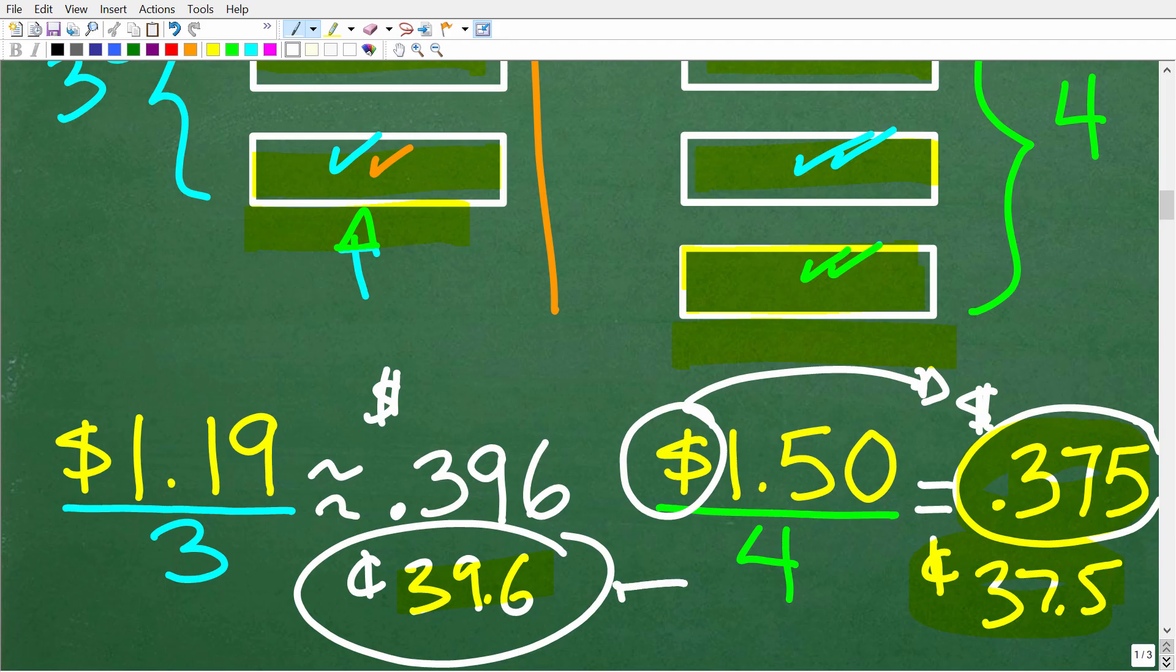So this is the more expensive offer. So the better deal is this right here, the four protein bars for $1.50.